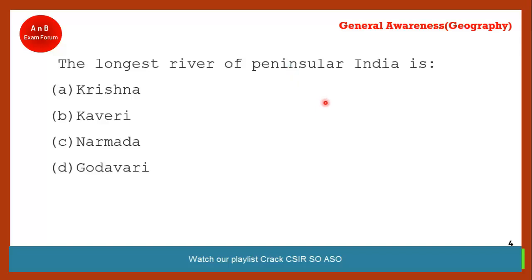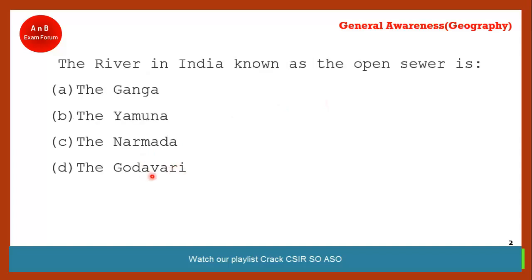The longest river of Peninsular India — we have already seen this — it is Godavari. The river in India also known as 'open sphere' — option A and B both are correct.